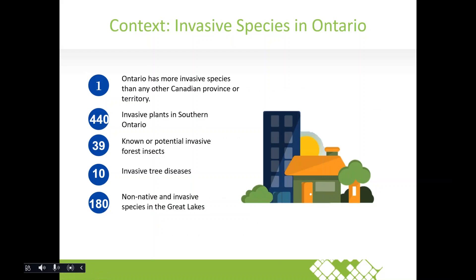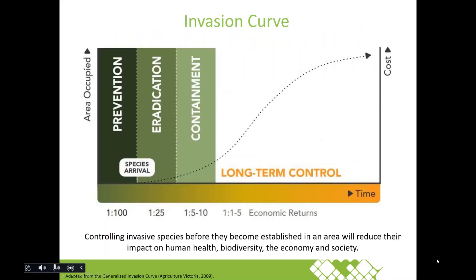To put invasive species into an Ontario context — unfortunately we are number one. Ontario has a large population in a small area, and with many ports of entry, accidental introduction risks are really high for invasive pests, plants, and aquatic species. There are over 440 known invasive plant species in southern Ontario, 39 known or potential invasive insects, about 10 invasive tree diseases, and around 180 non-native and invasive species in the Great Lakes.